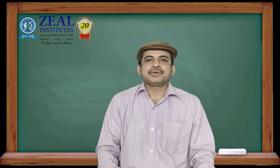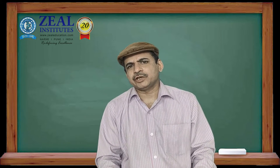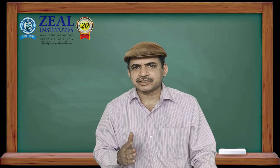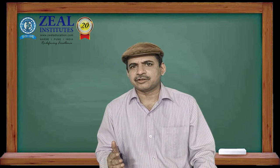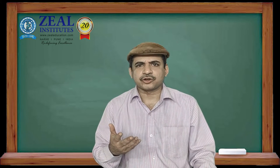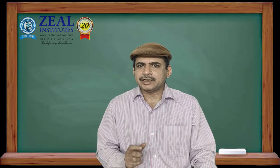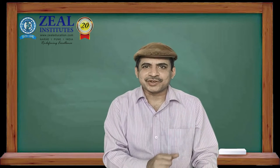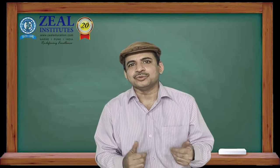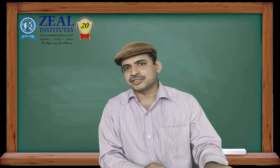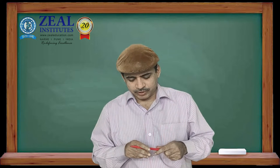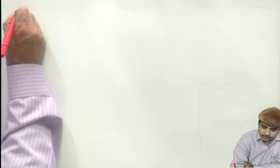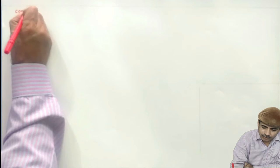Welcome back. In the previous two or three classes we obtained the state bodies from the transfer function, and those were obtained in different forms such as controllable canonical form, observable canonical form, or diagonal or Jordan canonical form. Now, at the end we discussed whether it is possible to convert the state model into transfer function, and if so, then how. So in this lecture we will see how a state model can be converted into transfer function. We will develop the formula for that.